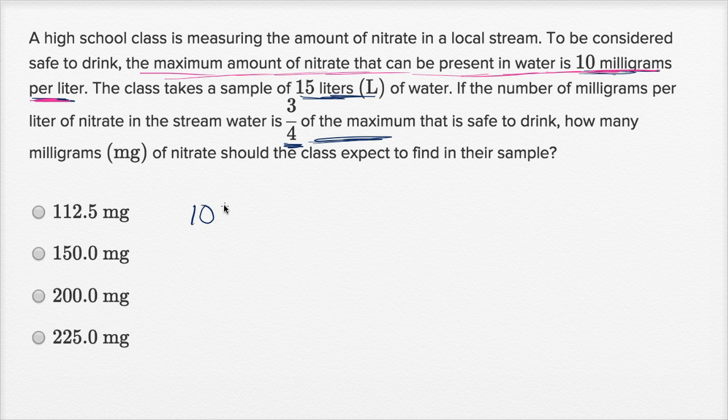So the maximum is 10 milligrams per liter. In their sample, they find 3/4 of this maximum concentration. So let's just multiply that times 3/4, which is going to be equal to 7.5 milligrams per liter.